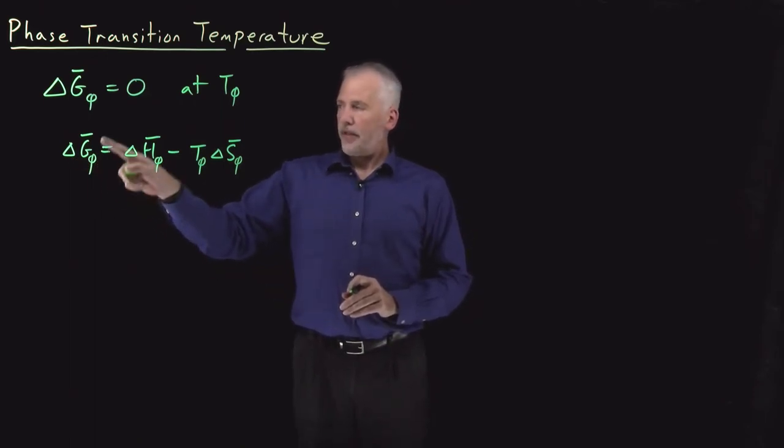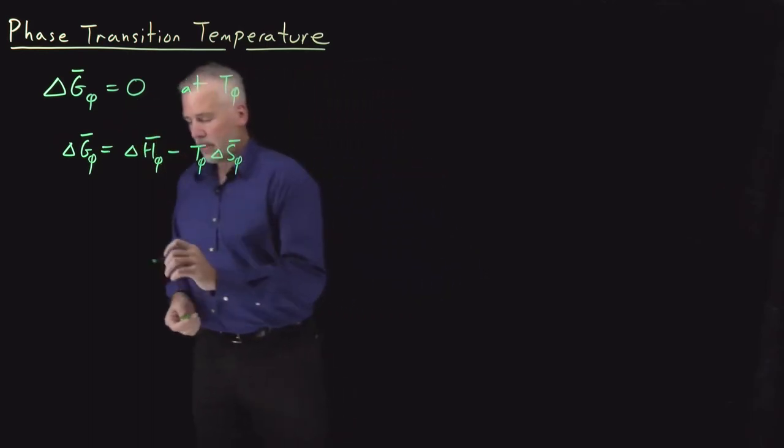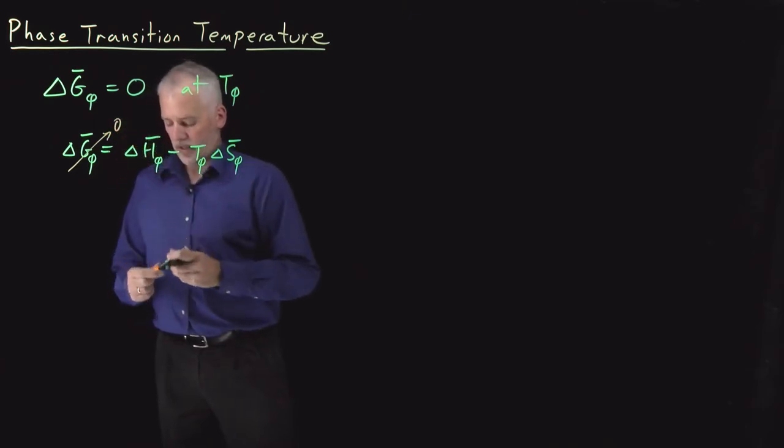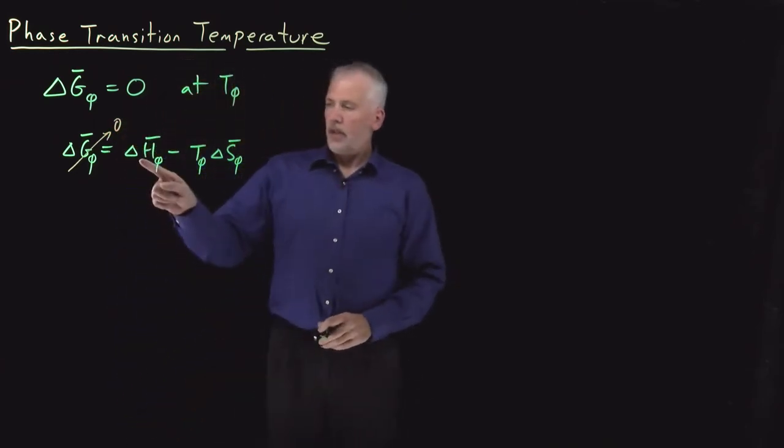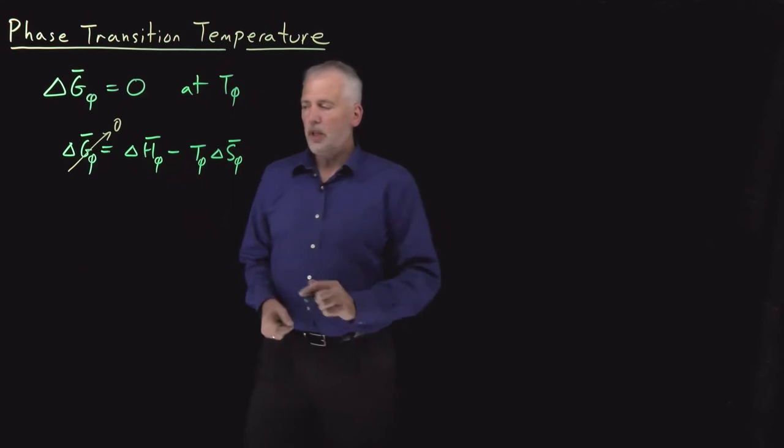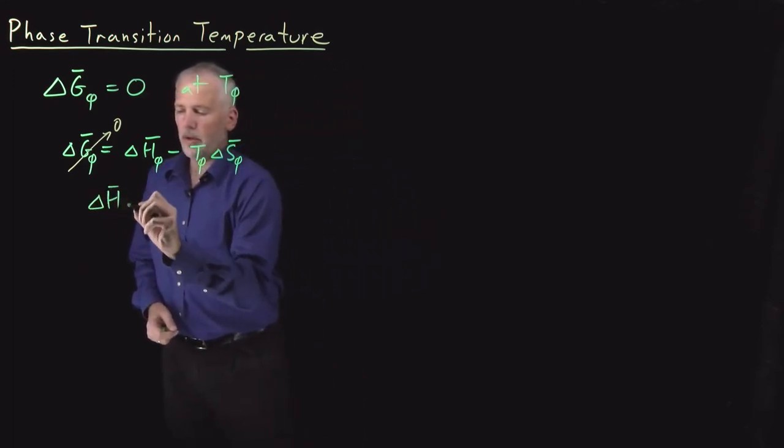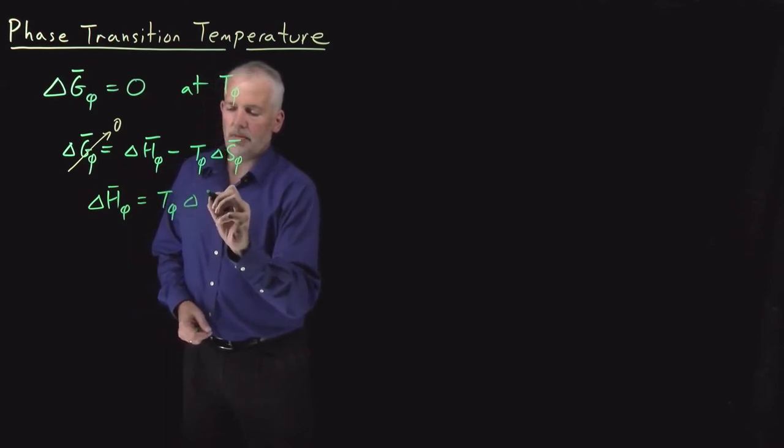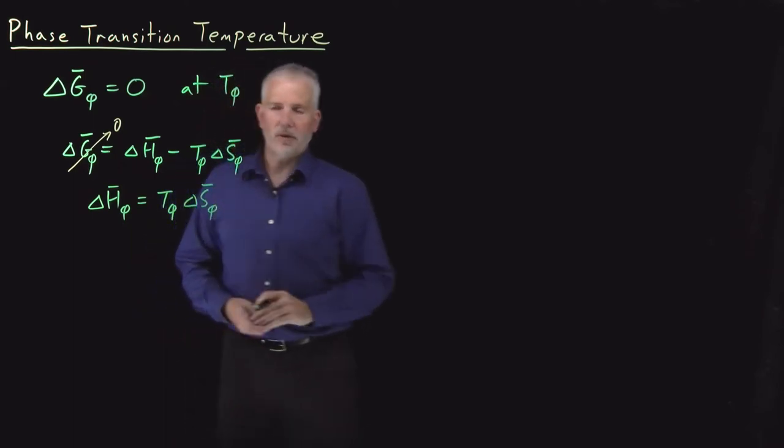The delta G of the phase transition is the thing that we know is equal to zero. That means that these two terms must be equal to each other. The enthalpy of a phase transition must be equal to the temperature times the entropy change of that phase transition.